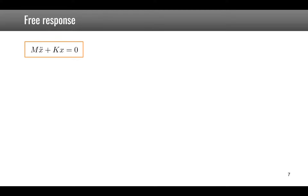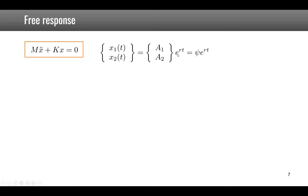The free response is computed as in the single degree of freedom case by setting the right-hand side — the force — to zero. We take the form of the response where x1 and x2 are represented by an amplitude a1 or a2 multiplied by e to the power of rt. This vector [a1, a2] is called psi. Substituting into the equation gives: K plus r-squared M times psi equals zero.